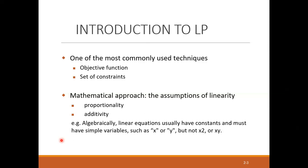Algebraically, linear equations used in optimization have constants and simple decision variables such as x or y. They should not include squared terms like x², cubed terms like x³, or multiplicative formats like x times y. We will solve an example shortly to make this clearer.